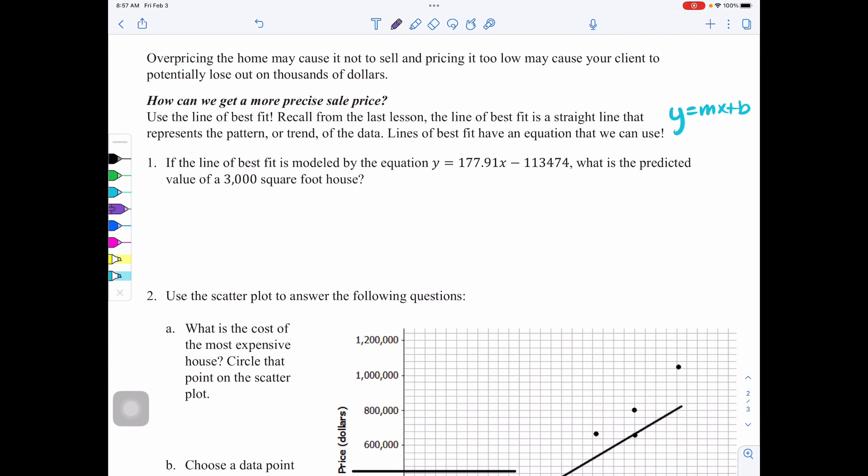Looking at question one, if the line of best fit is modeled by the equation y equals 177.91x minus 113,474, what is the predicted value of a 3,000 square foot house? When you see the words predicted value, that means you are using the equation, the equation of the line of best fit, to make your predictions.